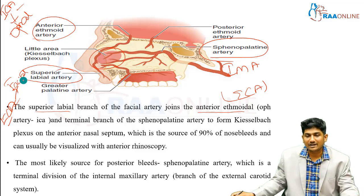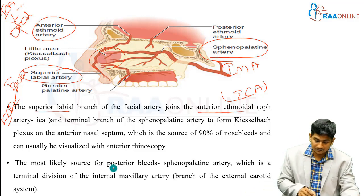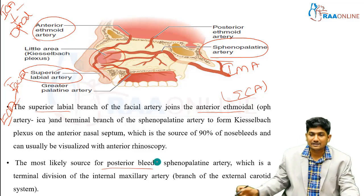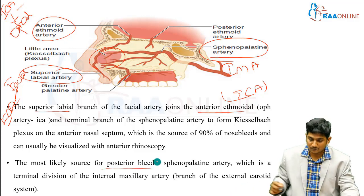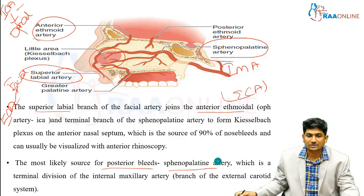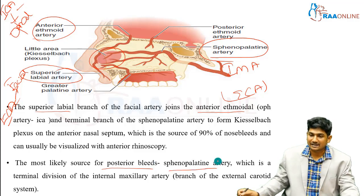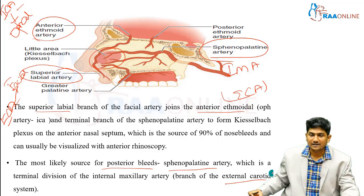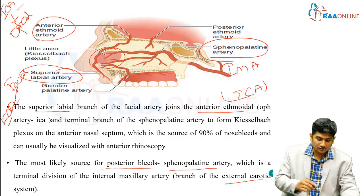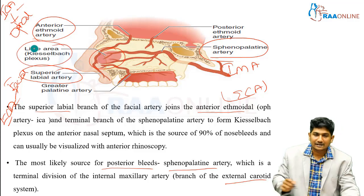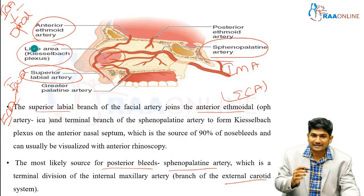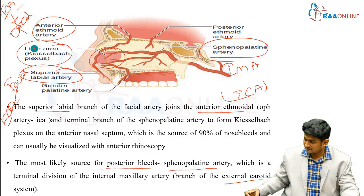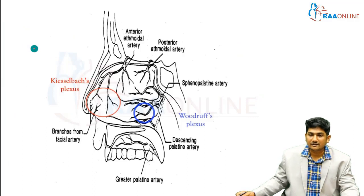Anterior bleeds can be easily visualized with anterior rhinoscopy itself. For posterior epistaxis, the more likely vessel involved is the sphenopalatine artery, which is the terminal division of the internal maxillary artery — again a branch of the external carotid system. Remember: Little's area and Kiesselbach's plexus for anterior bleeds.